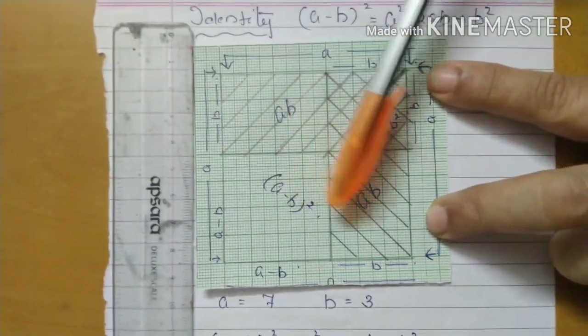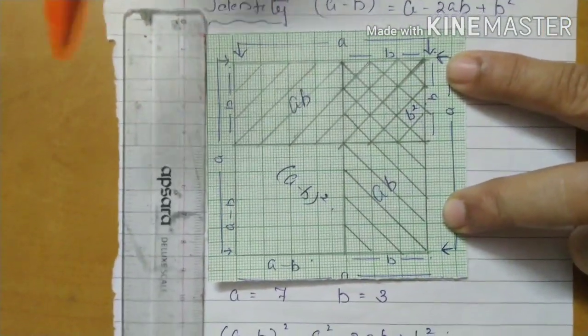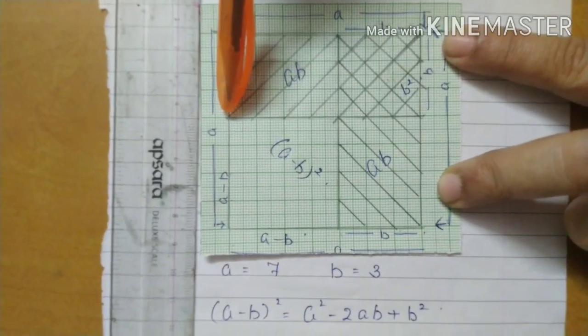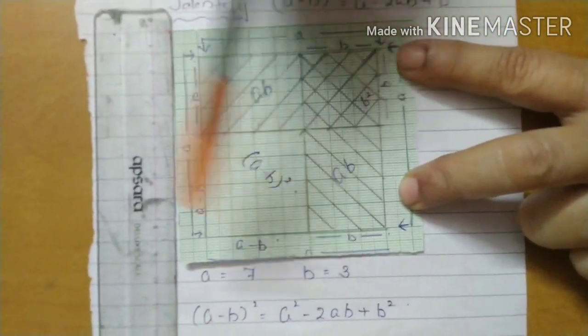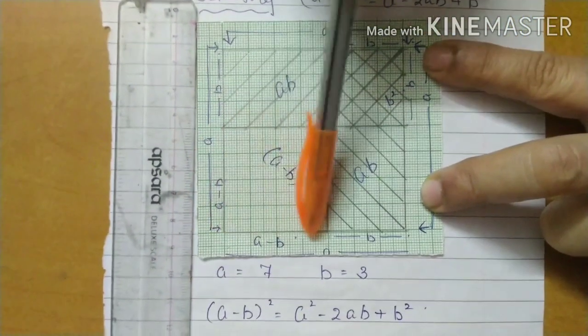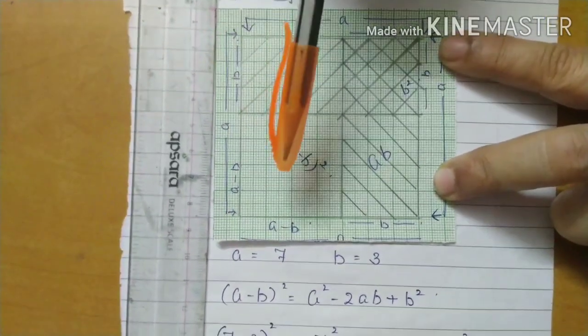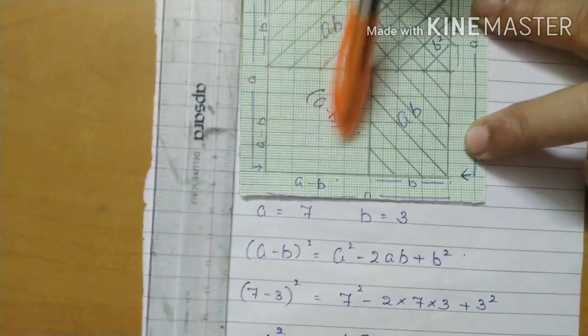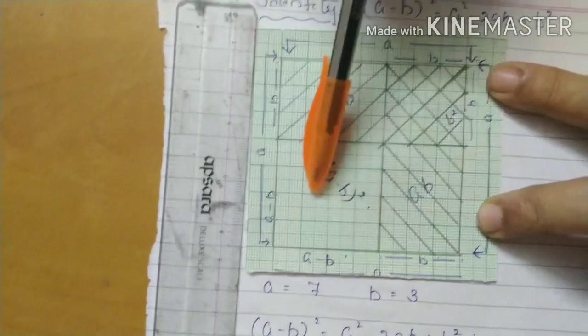That is the answer, (A minus B) the whole square. Now look here. I took 3 units here, here also 3 units, that means 4 units is remaining here. So 4 by 4 side, this unshaded part area is 16.